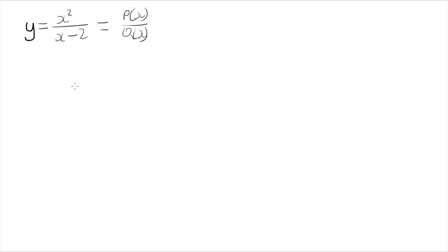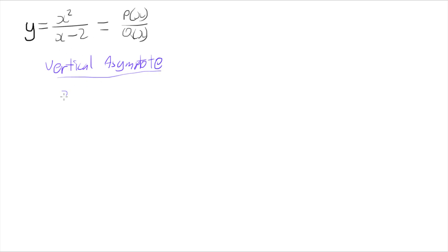Now to graph one of these, we want to look at things like asymptotes and intercepts. I'm going to start off with the first kind of asymptote, a vertical asymptote, and see if there's one of those. A vertical asymptote occurs when the denominator becomes 0, so I want to know when x minus 2 equals 0. That's quite easy to work out — we just add 2 to both sides, and we know we're going to have a vertical asymptote at x equals 2.